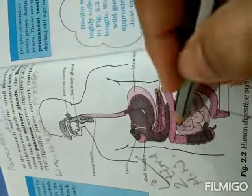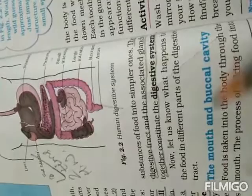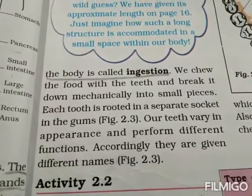Now let us know what happens to food in different parts of the digestive tract. The mouth and buccal cavity: food is taken into the body through the mouth. The process of taking food into the body is called ingestion. We chew the food with the teeth and break it down mechanically into small pieces.